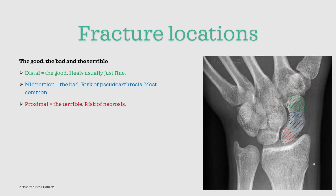An important division to know is the three main parts of where a fracture can occur. We can divide it into distal, middle, and proximal — also named the good, the bad, and the terrible in that order. The distal is the green-colored one in the picture, the middle is the blue-colored one, and the proximal is the red-colored one. If you need time to look over these, just pause the video.